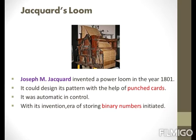Jacquard's Loom. In the year 1801, Joseph M. Jacquard invented a power loom called Jacquard's Loom that could design its pattern with the help of punched cards. Punch cards are small cards that are pre-programmed — that is, they are already programmed. He used these punch cards to control the loom, so the whole controlling was automatic. This was not a computer invention, but it initiated the era of storing data in binary form.